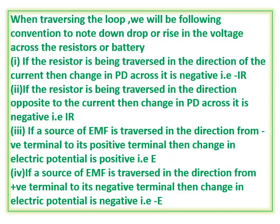The sign conventions: when travelling around the loop, if the resistor is traversed in the direction of current, then the potential difference change across it is negative (−IR by Ohm's law). If the resistor is traversed in the direction opposite to that of current, then take IR as positive. If a source of EMF is traversed from the negative terminal to the positive terminal, then the change in electric potential is positive, and vice versa is taken as negative.